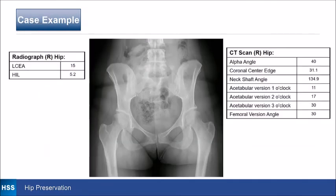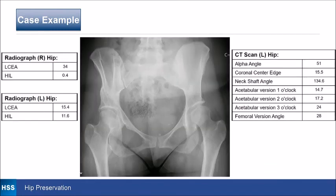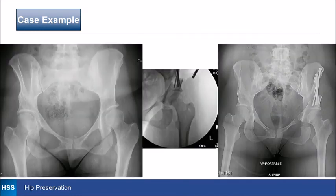Here's a recent case: a patient on the right side where the lateral center edge angle was 15 and she had some anteversion. Preoperatively she had fairly normal ischial femoral impingement values. Postoperatively we medialized her; her lateral center edge angle became 34, but her ischial femoral and quadratus femoris space decreased with some edema on the right hip, although she improved with her PAO. When we did the other side, we took that into account, didn't over-medialize her, and tried to keep the space the same.